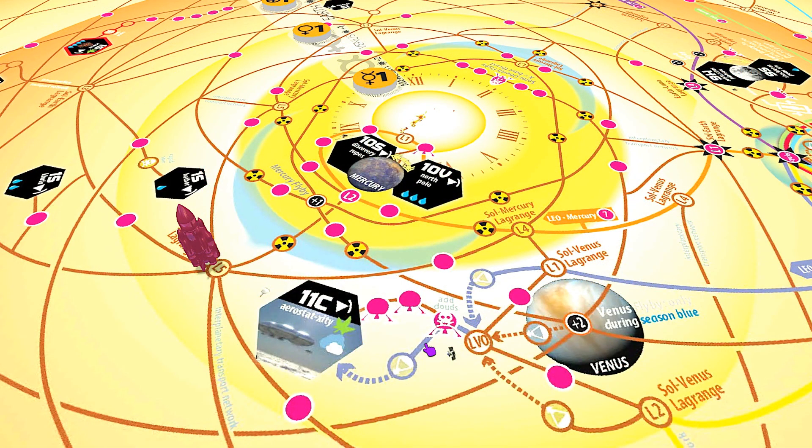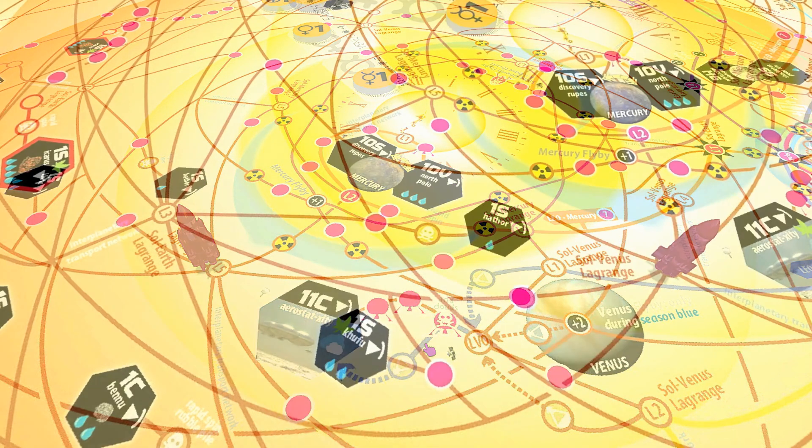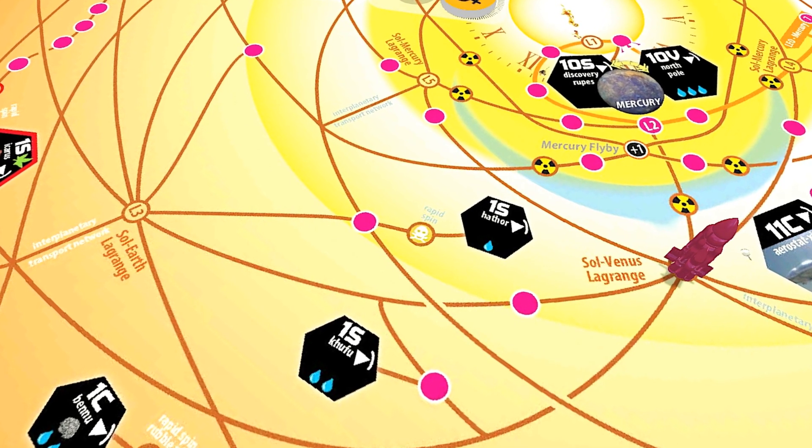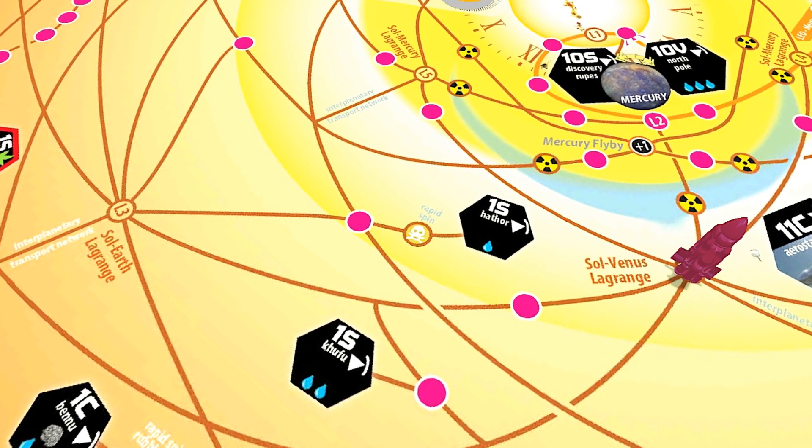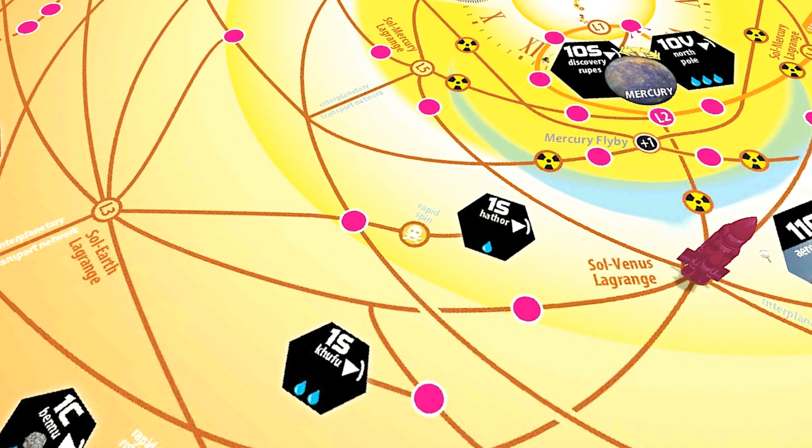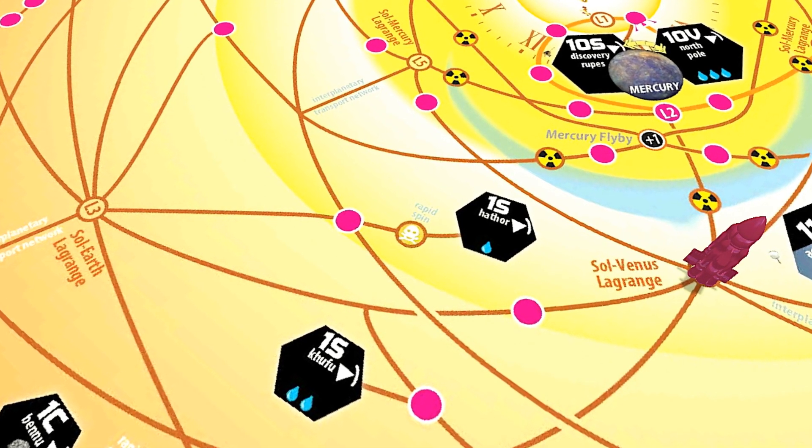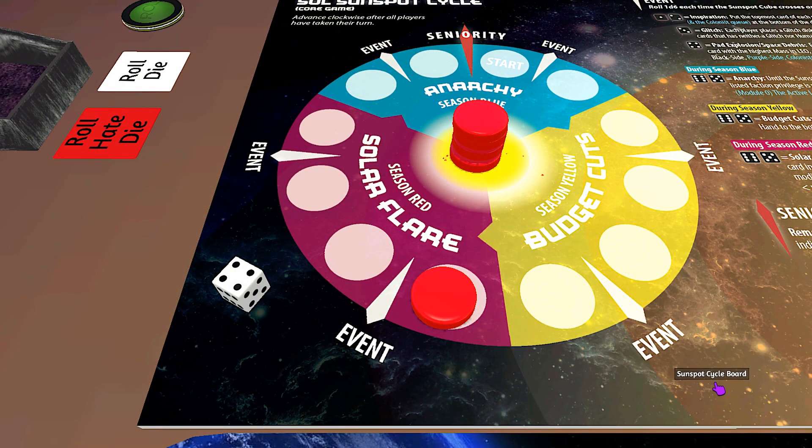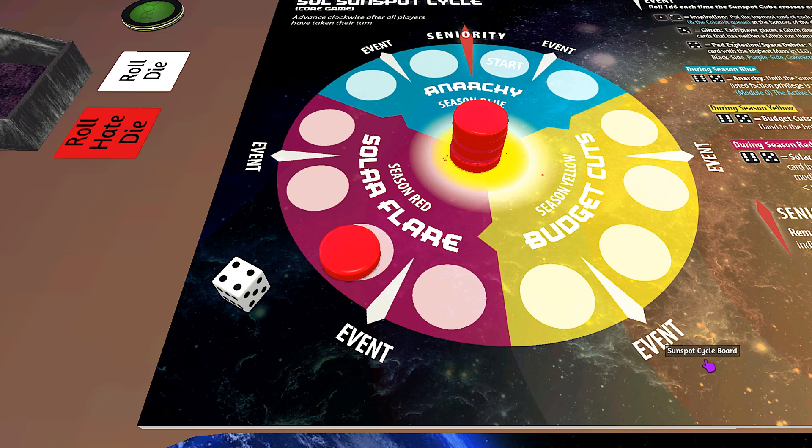Now that I'm a lot closer to the sun, I have a lot more thrust to work with. The only downside is that there is a risk of a solar flare here. Because it's season red, it may have made some sense to stop the rocket a little bit further out at the Sol-Earth Lagrange, for example, just in case.